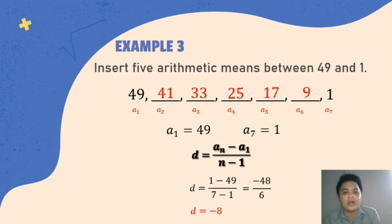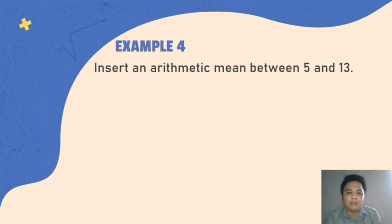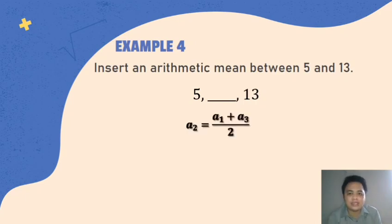So, we can now move forward to our last example. Example number 4. Paano kapag isa lang ang hinahanap? Isang min lang? Isang number lang? Anong gagawin? So, dito mas madali. Kapag daw isa lang hinahanap, let's say, insert an arithmetic mean between 5 and 13. So, isa lang. So, ano yung tsura niya? Ito siya. 5, tapos 13. So, isang number lang. So, dito mas madali. Kasi, para mahanap yung a sub 2, just add the two numbers and then divided by 2. So, medyo mas madali siya. Hindi mo na kailangan na medyo mahabang proseso. Kapag daw isa lang hinahanap, yung gitna lang, gagawin mo lang, i-add mo lang si first term tsaka yung last term then divided by 2. Ganon lang siya kadali.